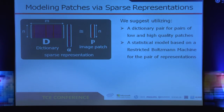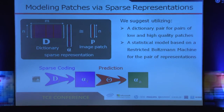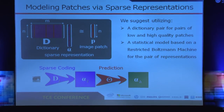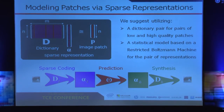This is our statistical model. We have three stages for the prediction. Given an input low-quality patch, we first perform sparse coding using dictionary D_L and get a sparse representation alpha_L. We then make the prediction to get a predictor for alpha_H. Finally, we do synthesis using dictionary D_H and get a high-quality patch.